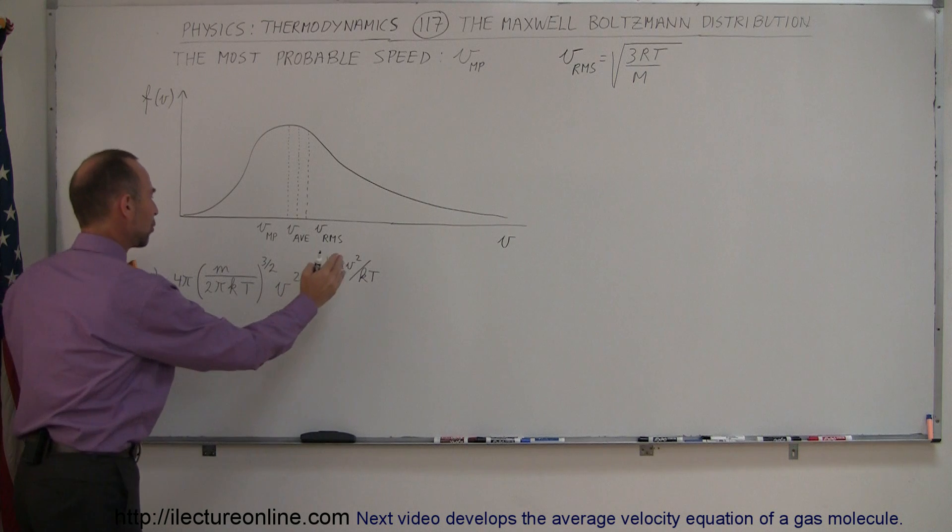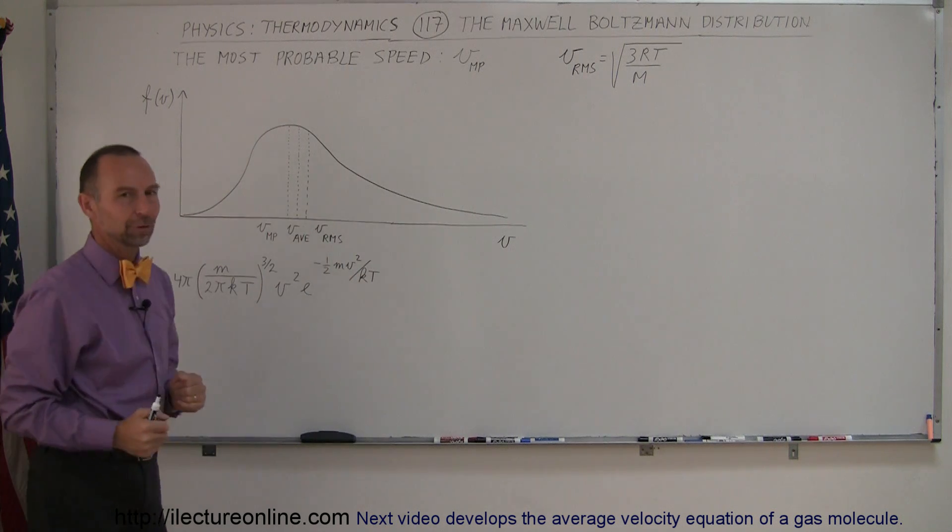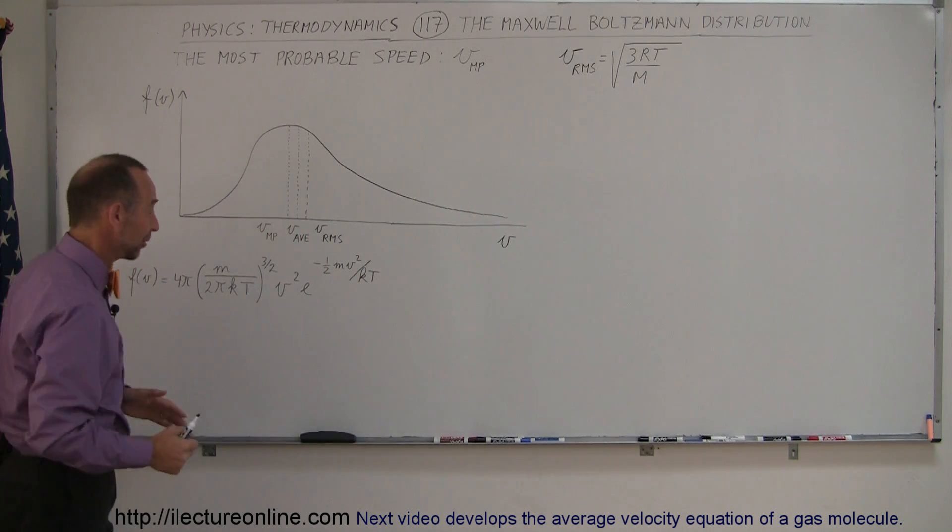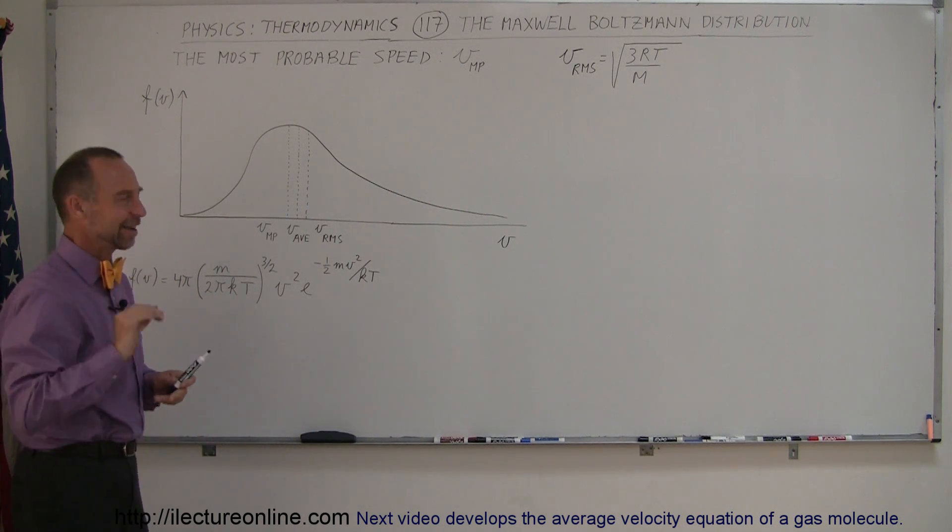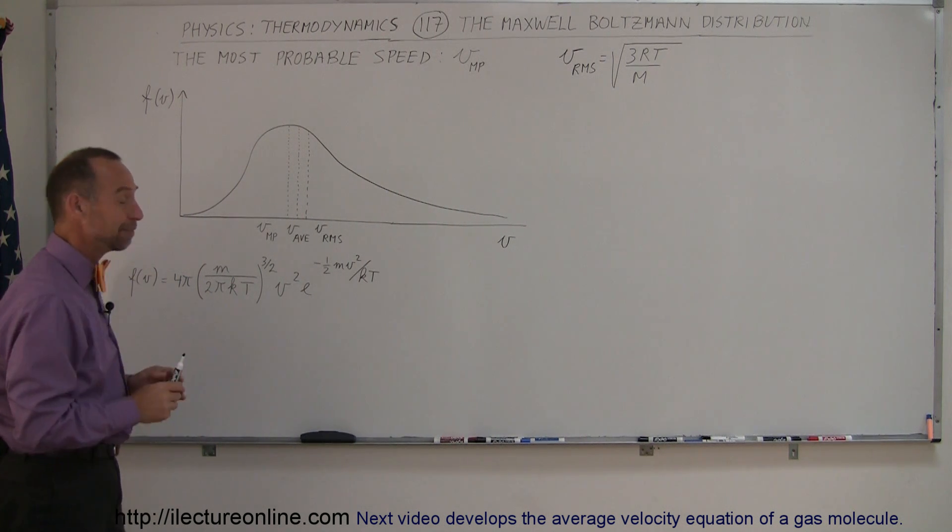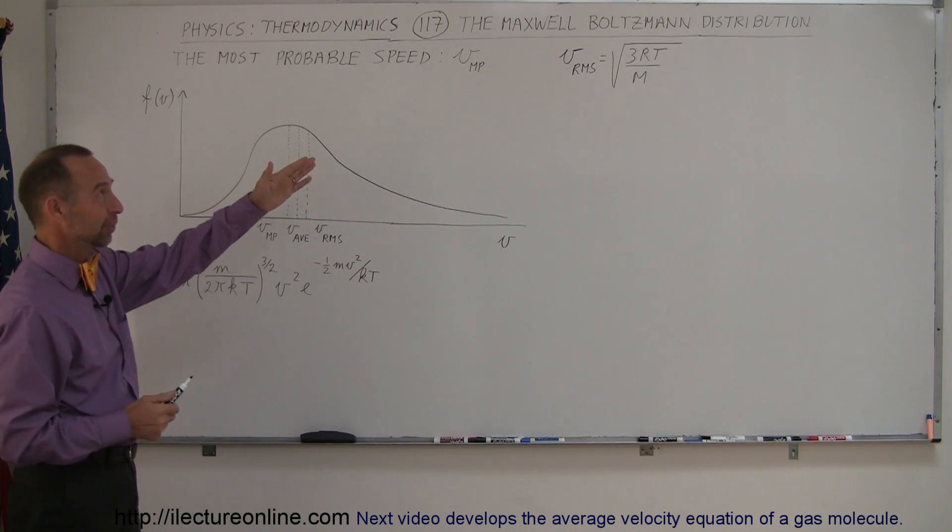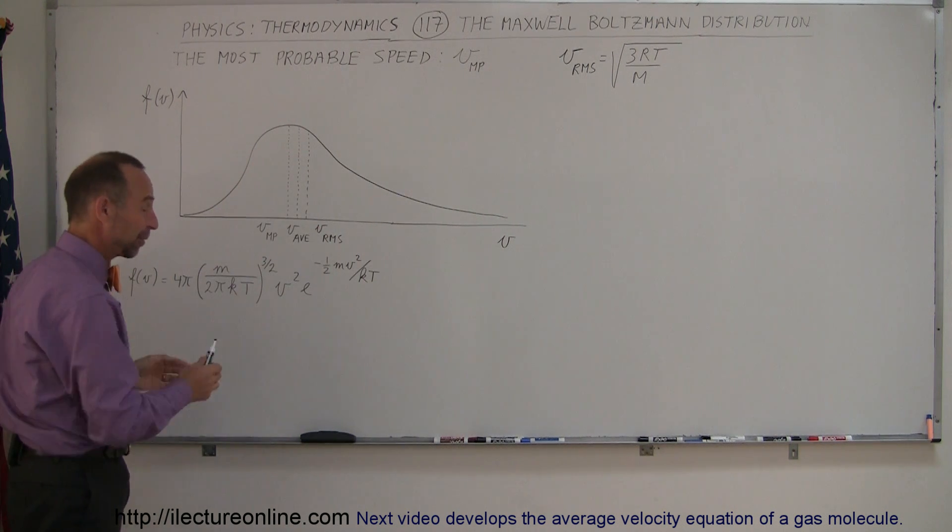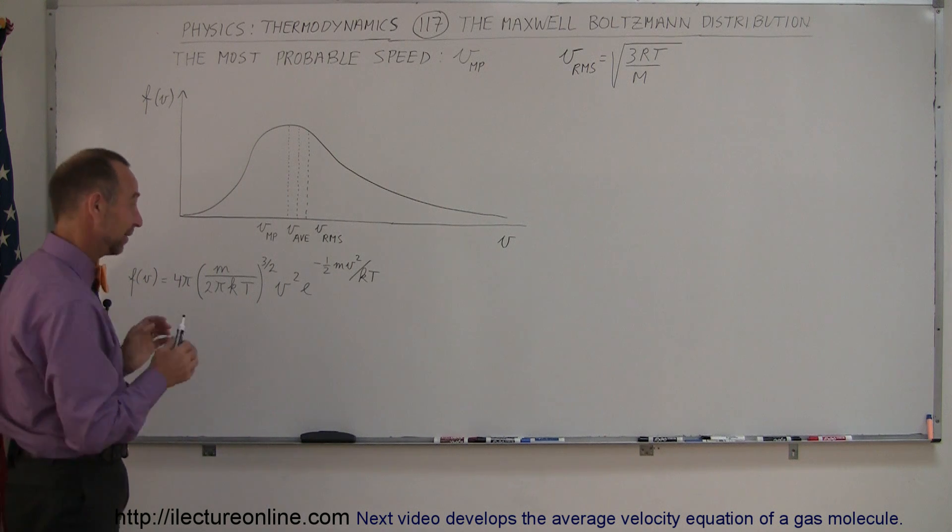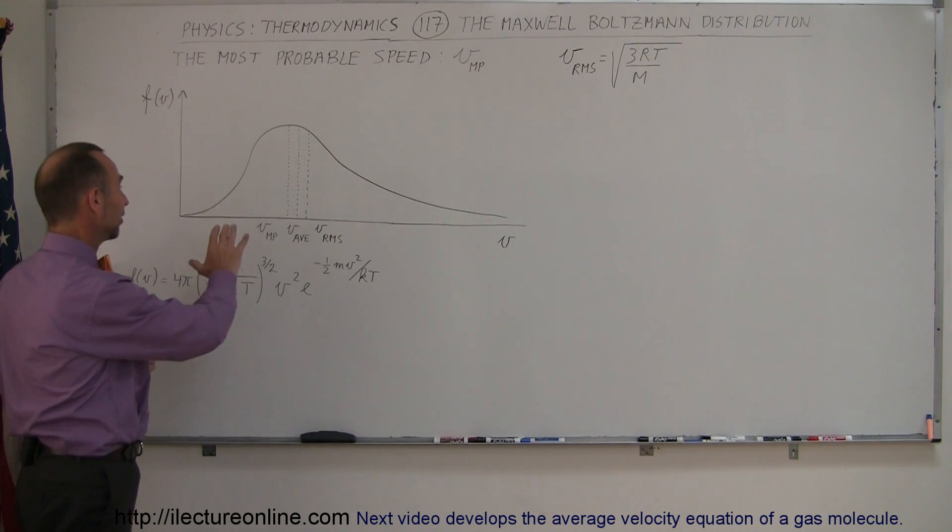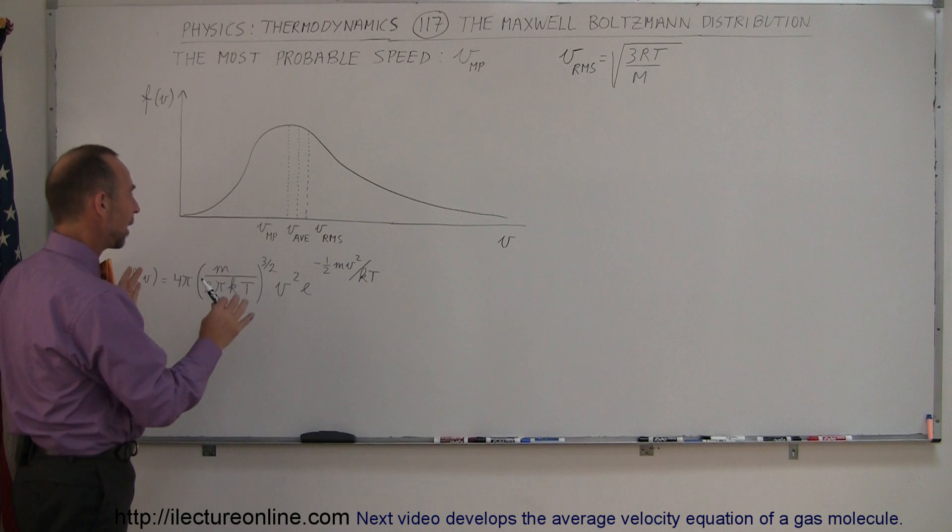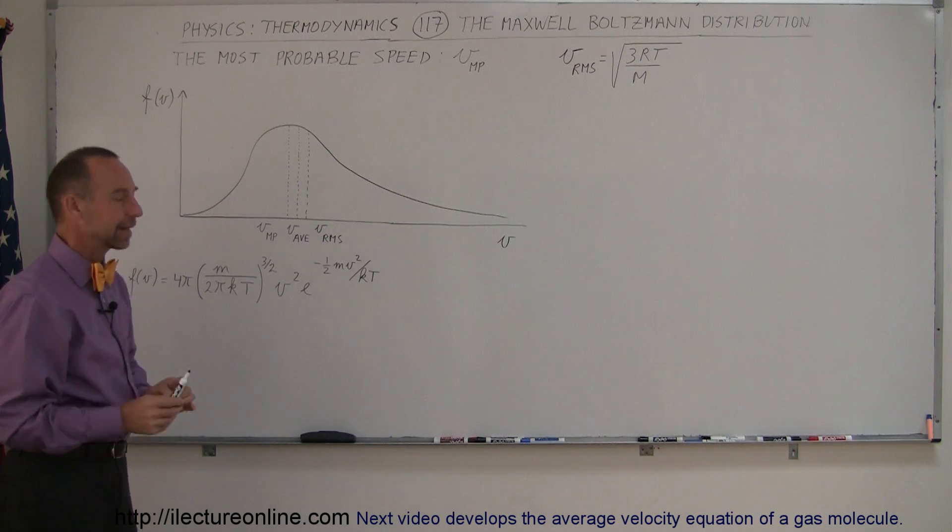Here's the equation that describes this curve, and before you turn off the video and go I am NOT going to understand that, hang on for just a moment, it's not really that bad. It is kind of a mean equation and the people Maxwell and Boltzmann who devised this equation, they were very smart. It's an amazing feat of physics that they were able to figure out how that distribution can be mathematically mapped.